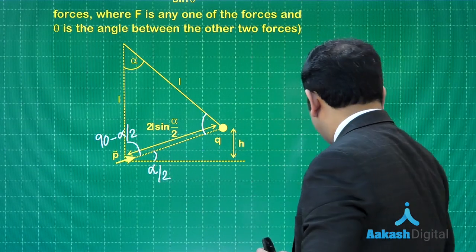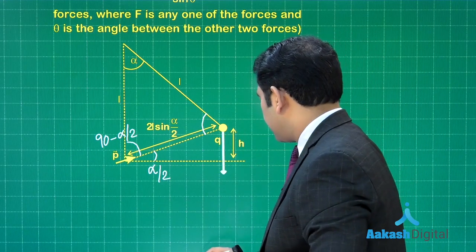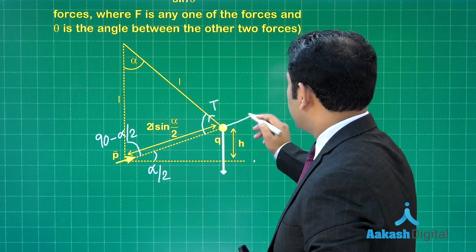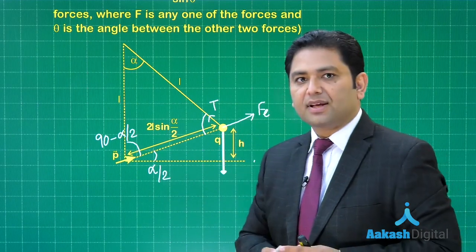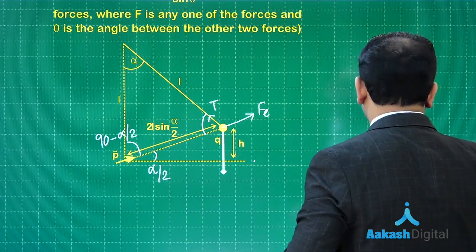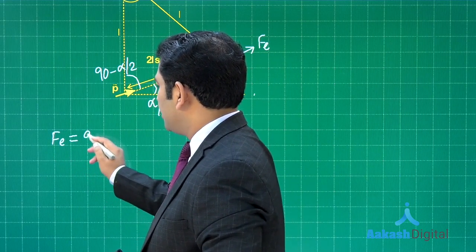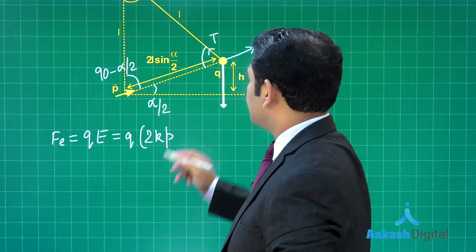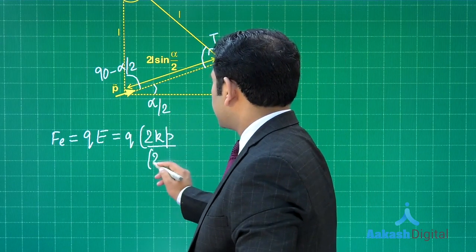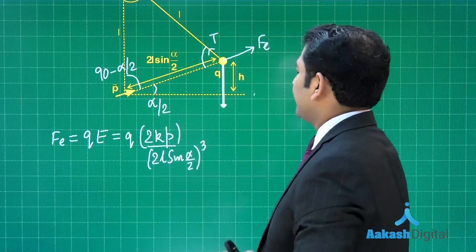The free body diagram at the final position shows: weight mg downward, tension T along the string, and electrostatic repulsion force Fₑ from the dipole. To calculate Fₑ: it equals q times the electric field due to the dipole. Since the charge is on the axial position of the dipole, Fₑ = q × 2kp / (2l sin α/2)³.